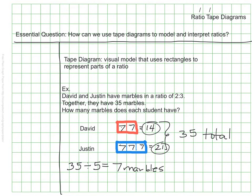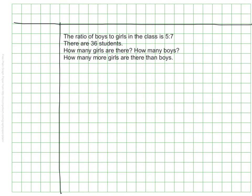Let's try another example. In this example we're comparing students in a class, and the ratio of boys to girls is five to seven. We also know that the total number of students is 36. So we're going to set up a tape diagram that represents this. Remember, as you're setting this up, be careful that you are using the same sized square or rectangle to represent both the boys and the girls as you set up your units.